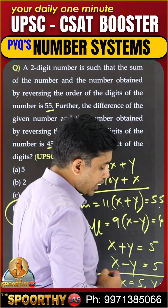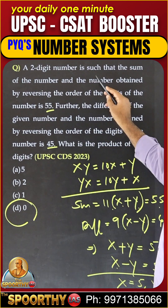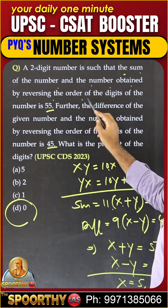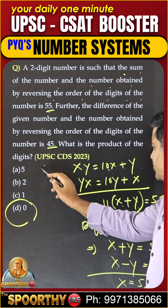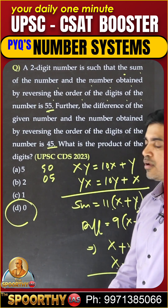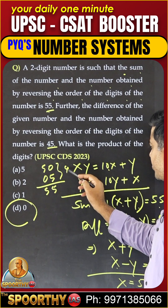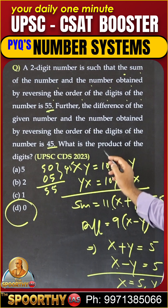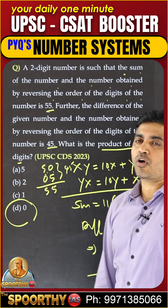Option D is the answer. The 2D number is such that the sum of the number and the number obtained by reversing the digits is 55. The actual number is 50, and the reverse number is 05, which is not a standard 2D number. The sum is 55 and the difference is 45 — perfectly matching. So the product of the digits is 5 into 0, which is 0. Option D is the answer.